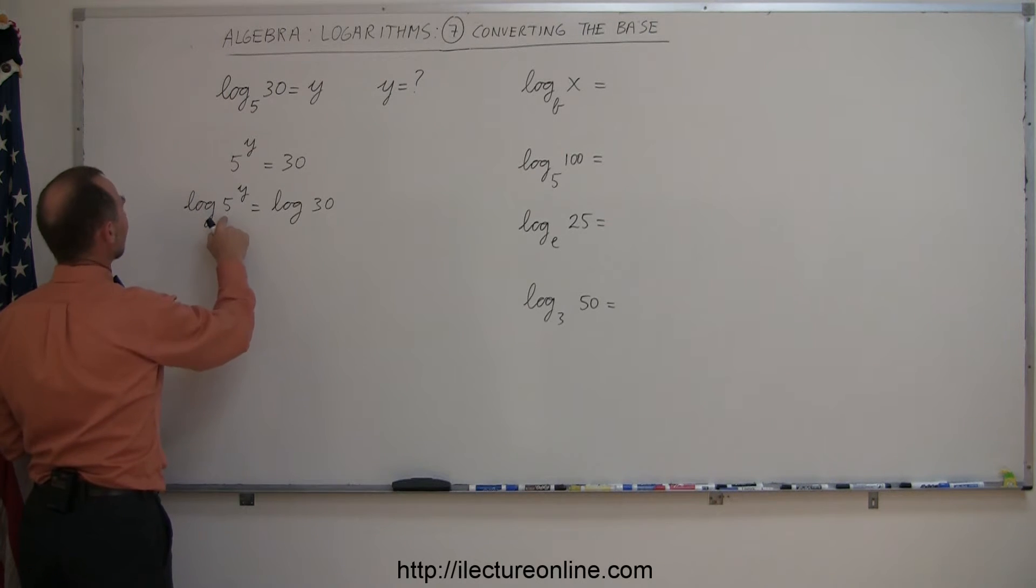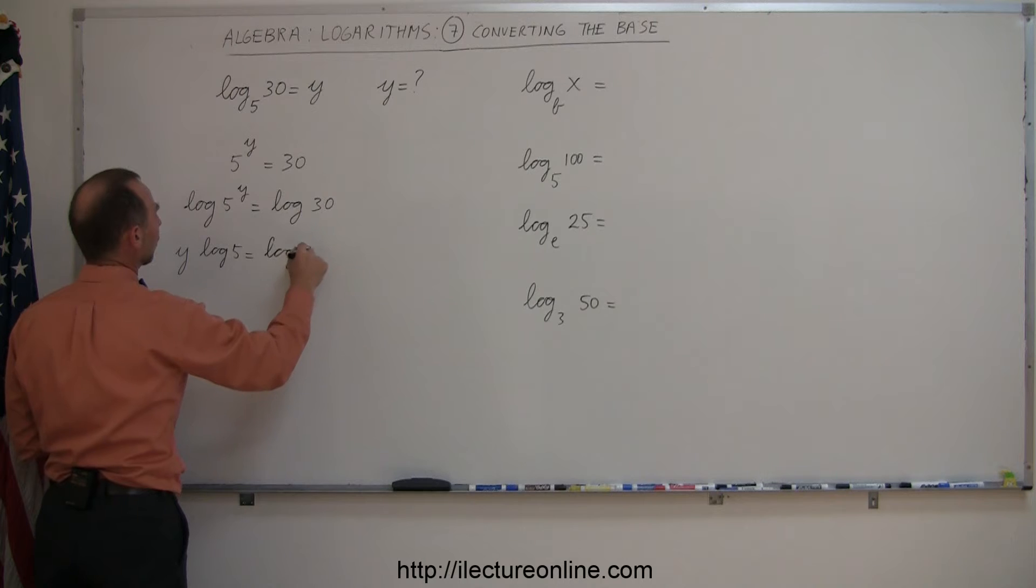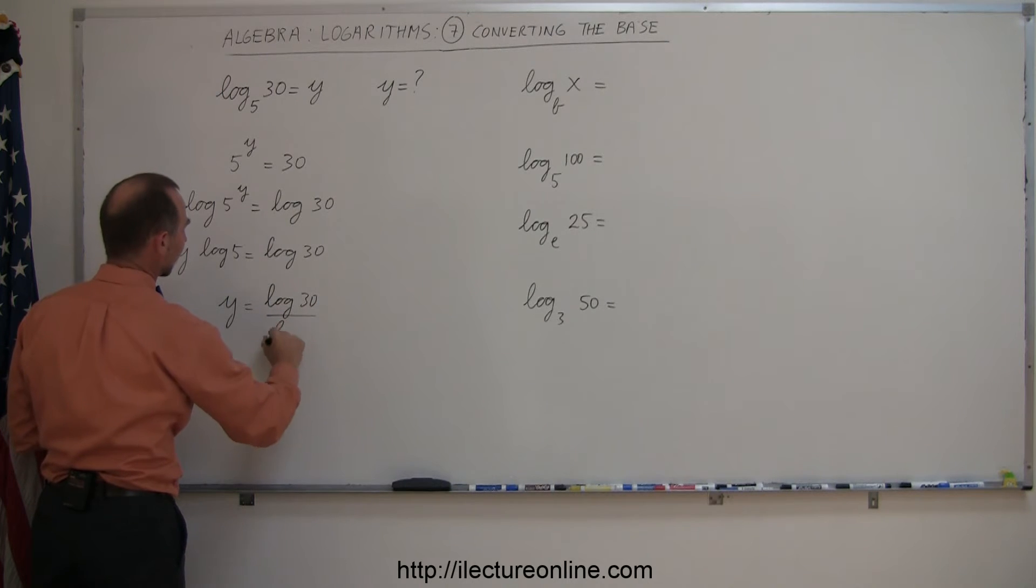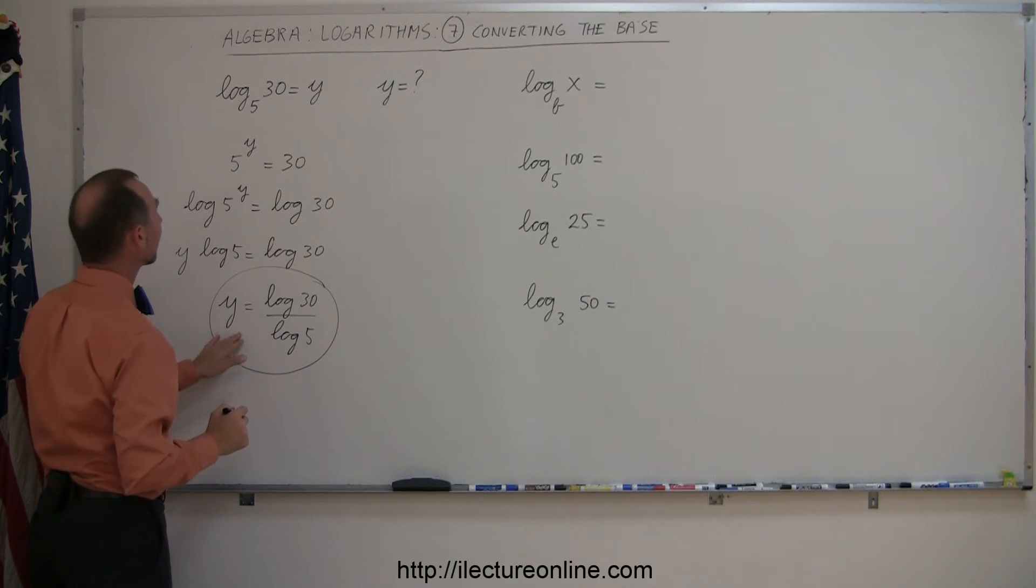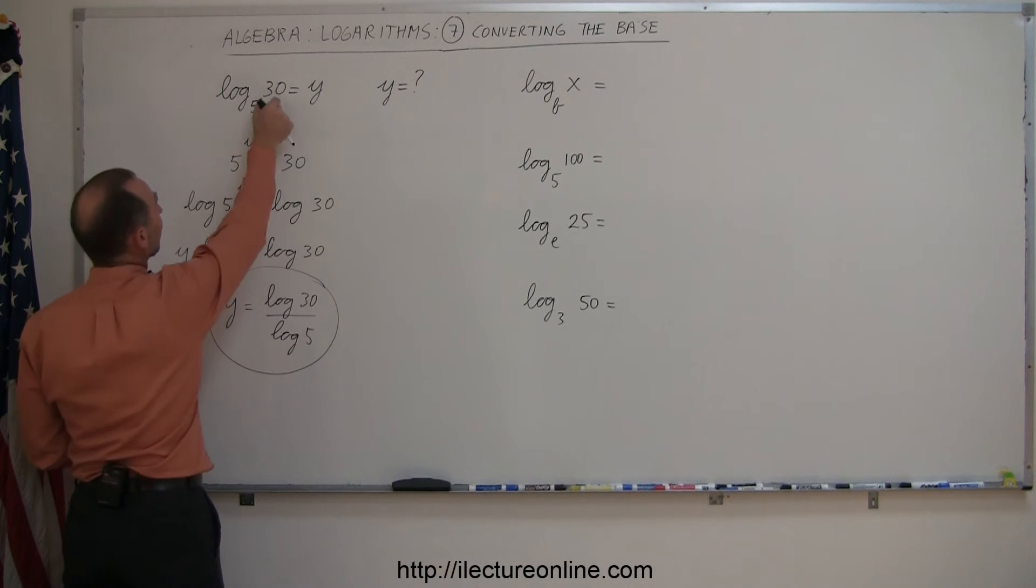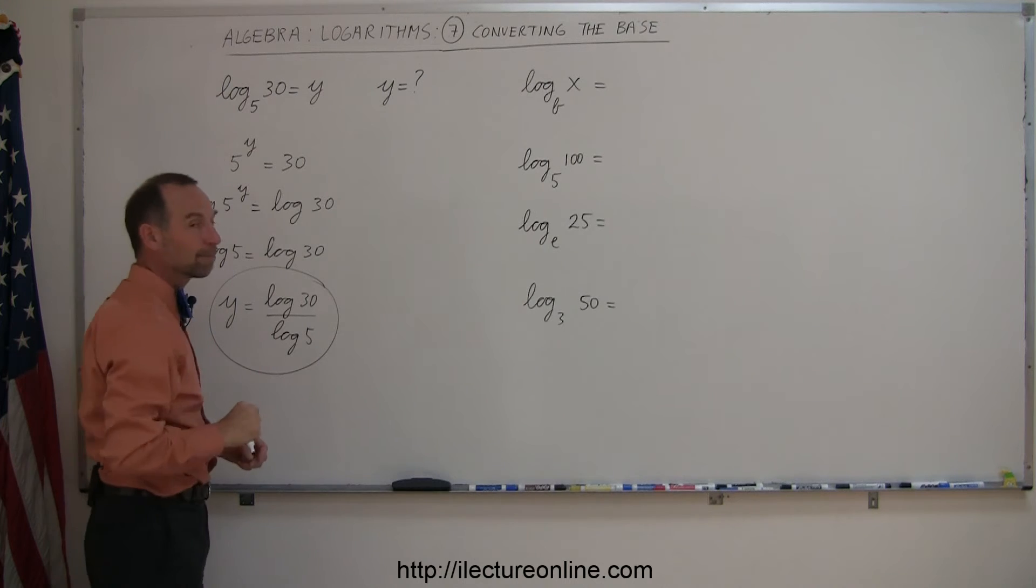And of course, the log of 5 to the y power, we can bring the y in front, so this is y of the log of 5 equals the log of 30. And finally, dividing both sides by the log of 5, we get y equals the log of 30 divided by the log of 5. And this is to illustrate how you can find y by converting from log base 5 to log base 10. So we take log of base 10 of the number, divide by log of the base, and that equals y.